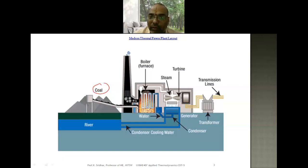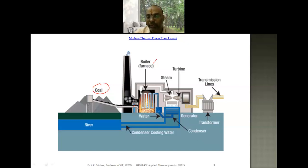Here we have the boiler. Inside the boiler there is water, which is heated by burning coal, converting the water into steam. Superheated tubes are also present, and the superheated steam impinges on the turbine blades. At the exit of the turbine we have mechanical power, but since our interest is to generate electrical power, the turbine is coupled to the generator by means of a shaft, where the mechanical power is converted into electrical power.